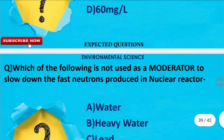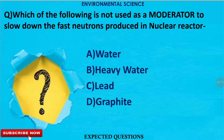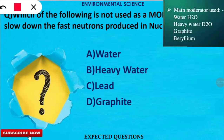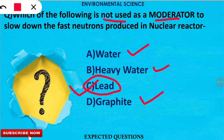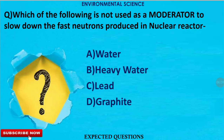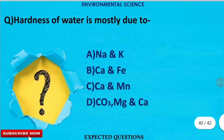The next question is related to nuclear reactors: which of the following is not used as a moderator to slow down fast neutrons produced in a fission reaction? The correct option is C — lead is not used as a moderator. Normal water, heavy water, and graphite are used as moderators.